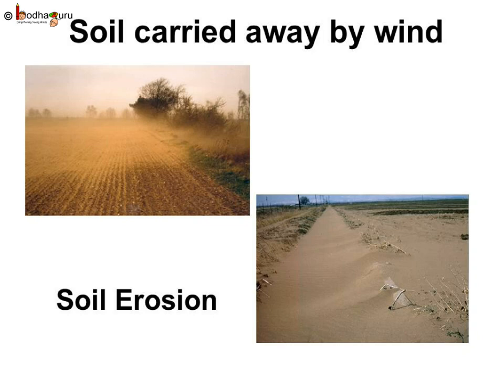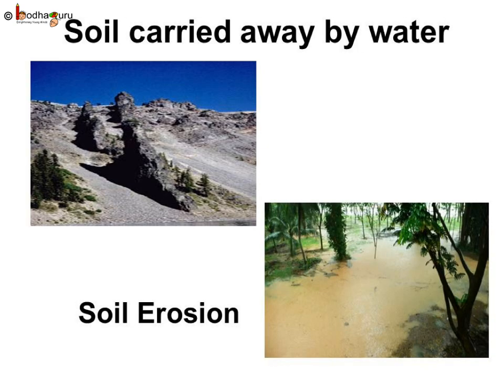What happens when the wind blows hard or if the water current is fast? Often the top layer of soil is blown away by wind or washed away by the water. This removal of the topsoil from a place due to the wind or water is called soil erosion.